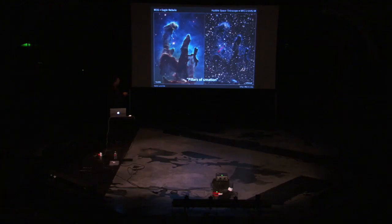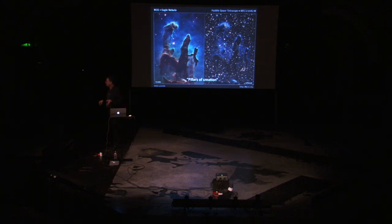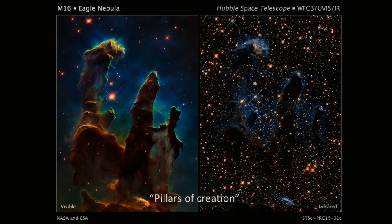If you look at the right infrared image, infrared light is very good at seeing through dust — that's why it works for your remote control; you can see through things. And so what you see here are all these stars all over the place that are completely invisible in the visible light image, because the infrared light can actually get through the dust and clouds. This is an area where a huge number of stars are being formed.